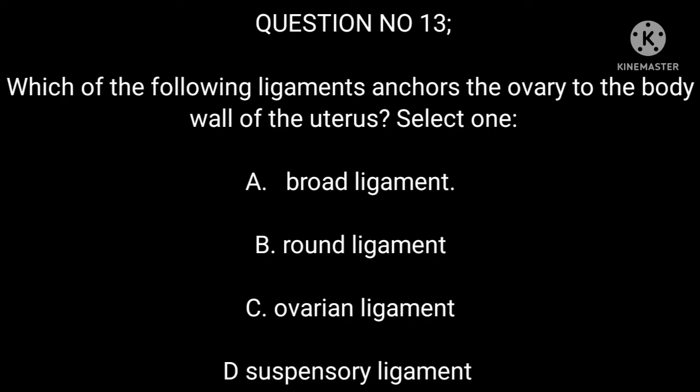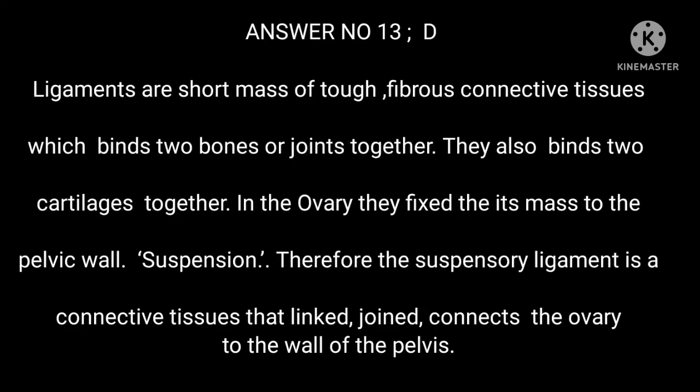Question number 13. Which of the following ligaments anchors the ovary to the body wall of the uterus? Select one. A. Broad ligament. B. Round ligament. C. Ovarian ligament. D. Suspensory ligament. Answer number 13: D. Ligaments are short masses of tough, fibrous connective tissue which bind two bones or joints together.